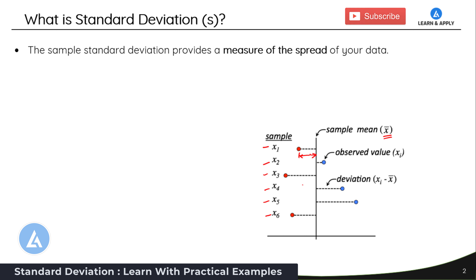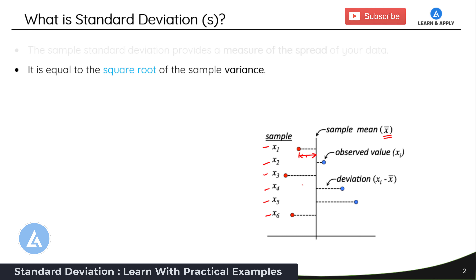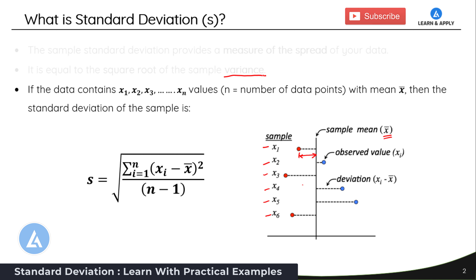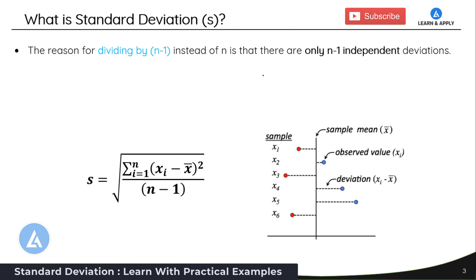Standard deviation indicates the measure of spread across your entire sample, making it one of the most important concepts for dispersion. It is equal to the square root of the sample variance. If the data contains x1, x2, x3 up to xn values, where n equals the number of data points and the mean equals x-bar, then the sample standard deviation is: S equals the square root of the summation from i=1 to n of (xi minus x-bar) squared, divided by n minus 1. The denominator is n minus 1 because there are only n minus 1 independent deviations.